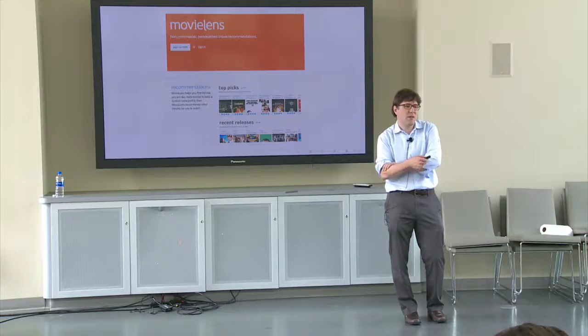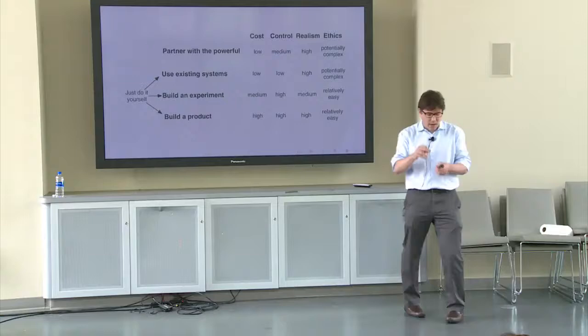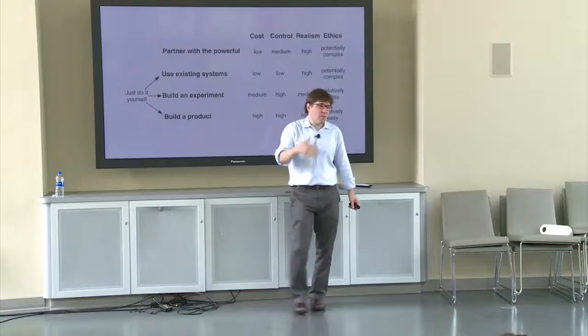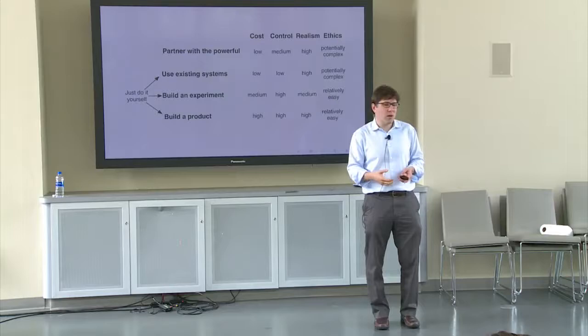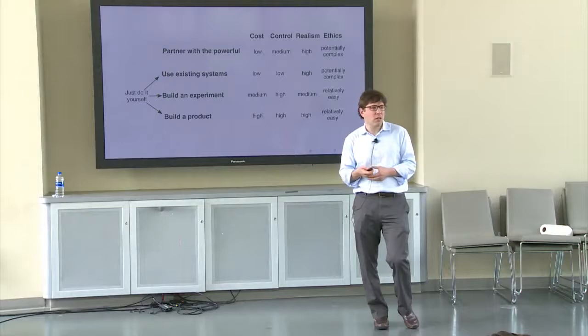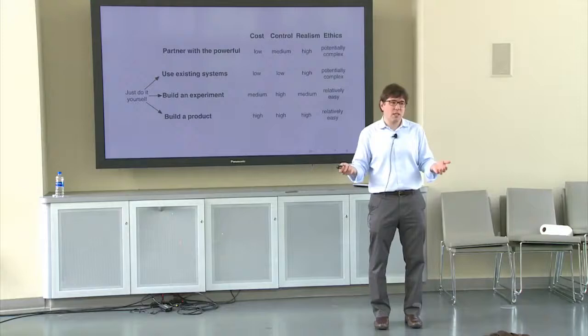So those are the four strategies that I see. None of them are perfect. But I really do want to emphasize these three strategies. That is, you don't just need to work with partners, you can do it yourself. And there are a lot of downsides that come from working with partners, and doing it yourself creates a lot of opportunities for more control. But you also give up stuff, like the scale that you get from working with partners, and sometimes the realism. So there is a trade-off, but both sides of this exist. You don't just have to work with partners. Any questions?